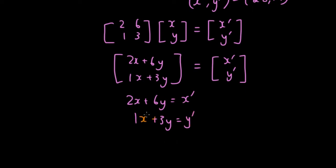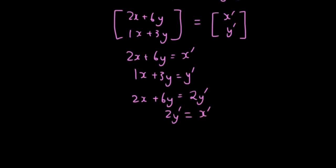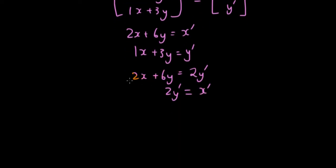Now if you multiply the bottom equation by 2, you will get 2x plus 6y equals 2y', which means 2y' is equal to x', because this part is the same as this part, so 2y' must be the same as x', and this is the result of our transformation.